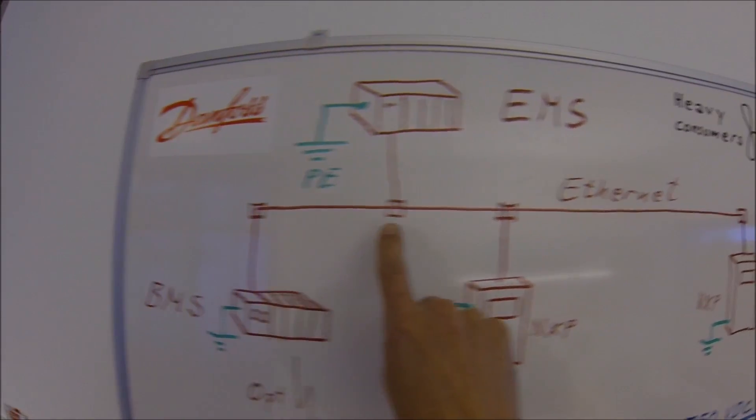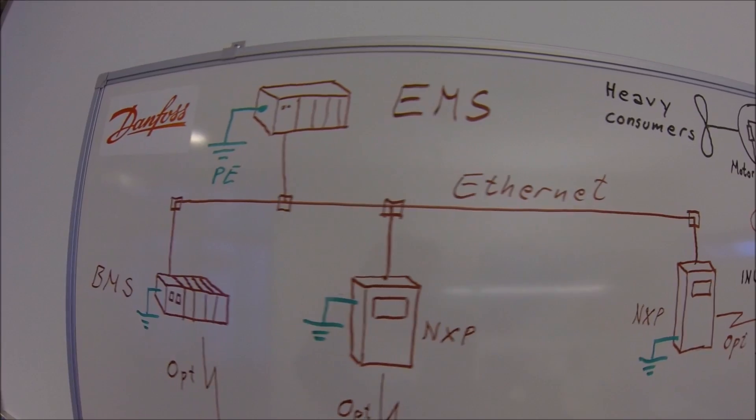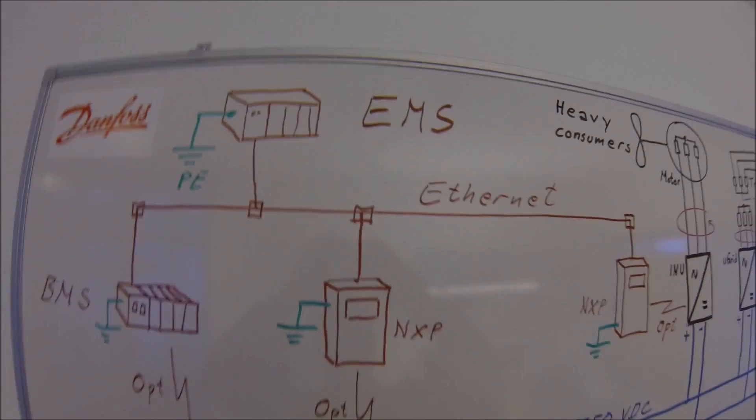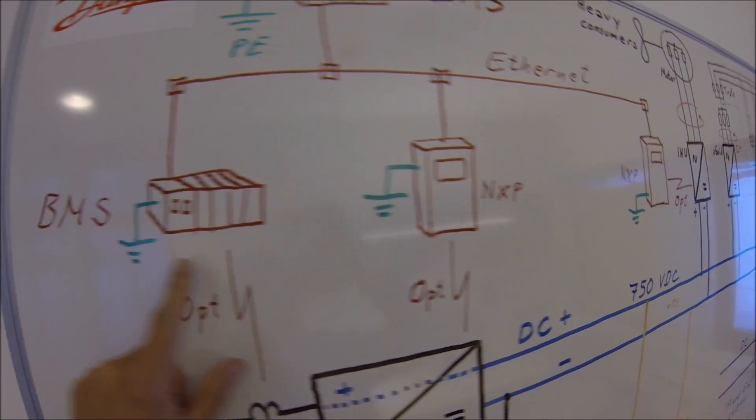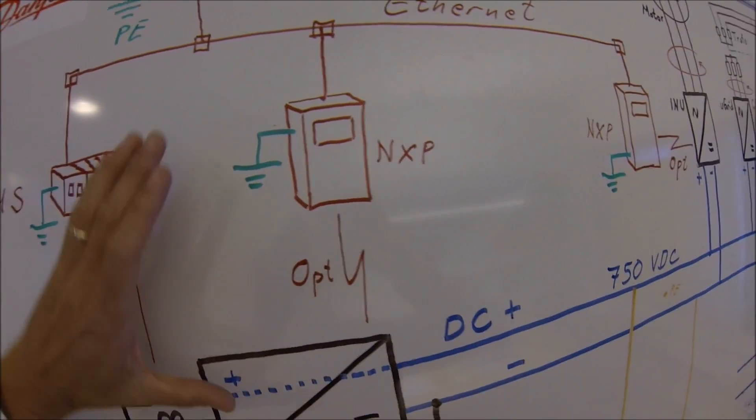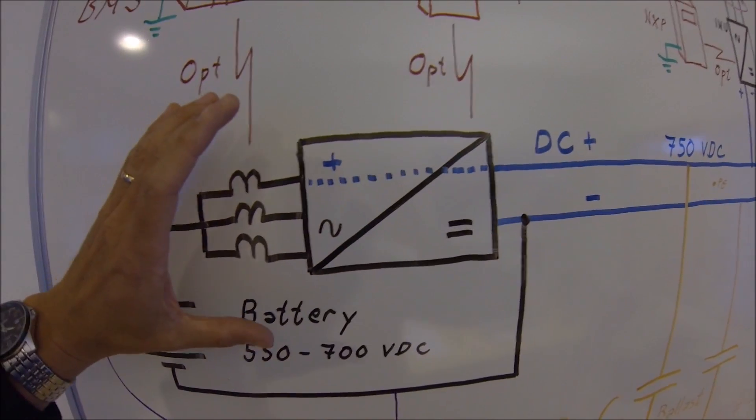It usually is supported by an Ethernet or some kind of industrial field bus system, communicating with a battery management system and NXP control modules, the control modules for the VACON drives.